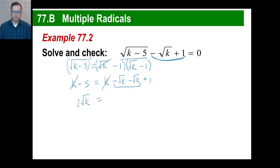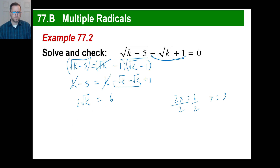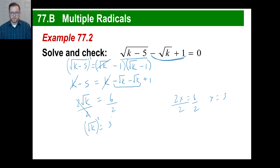Moving the 5 over gives positive 5, so 5 plus 1 equals 6. We have 2 times square root of k equals 6 — just like 2x equals 6, divide both sides by 2. Square root of k equals 3. We need to square both sides again: k equals 9.